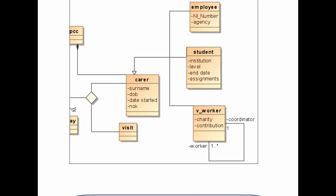Here are the attributes displayed on our diagram. Carer has four attributes: surname, date of birth, date started, and next of kin. All three subtypes would inherit those. Employee has additionally national insurance number and agency name. Student has four attributes: institution, level, end date, and assignment. Similarly, voluntary worker has associated charity and whether that charity will make any contribution.